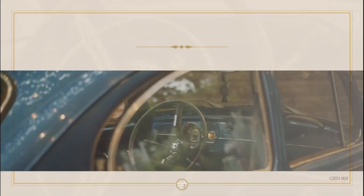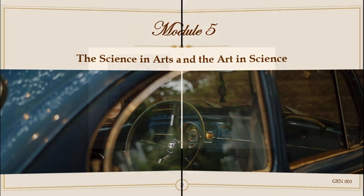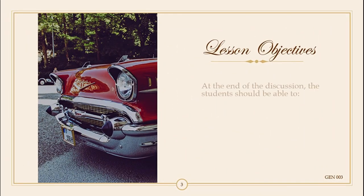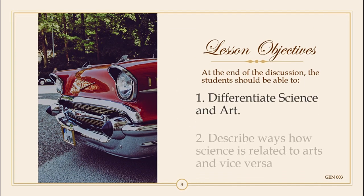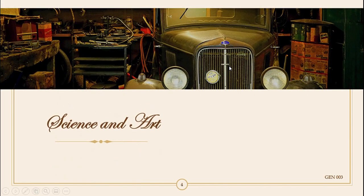We'll start off first with Module 5, which is the Science and Arts and the Art in Science. Before we delve further into the discussion, let's have the lesson objective. At the end of the discussion, students should be able to differentiate Science and Arts, and you should also be able to describe ways how Science is related to Arts and vice versa.